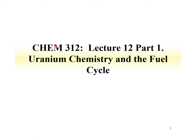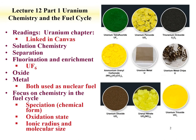Welcome to lecture 12 for Chemistry 312. This lecture is on uranium chemistry and the fuel cycle, and it's in two parts. The readings for both parts are the uranium chapter, the chemistry of the actinides and transactinides, which is linked on the website. This lecture is going to cover the chemistry of uranium, how it differs from some of the transition metals, and what general trends we'll see with the actinides based on this uranium chemistry. We'll also explore uranium chemistry within the fuel cycle.